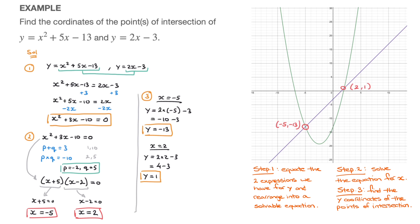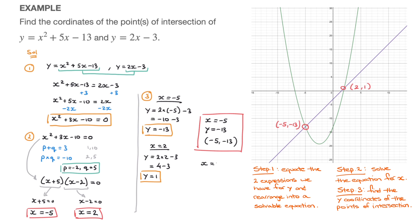To make things clear, the final answer: x equals negative 5 and y equals negative 13, which we present as the point negative 5, negative 13 — the first point of intersection. The second point of intersection has x equals 2 and y equals 1, giving the point 2, 1.